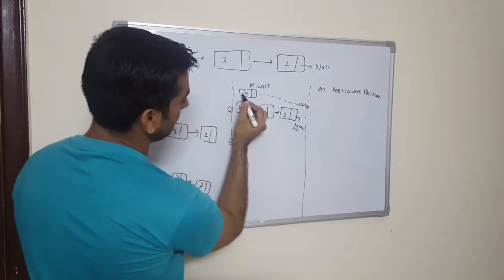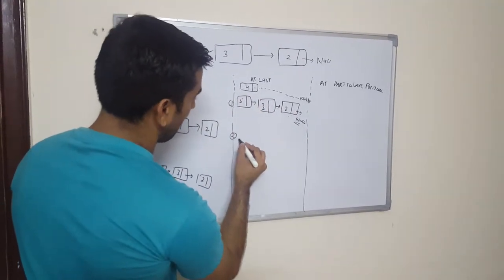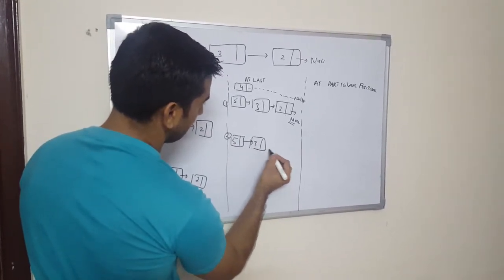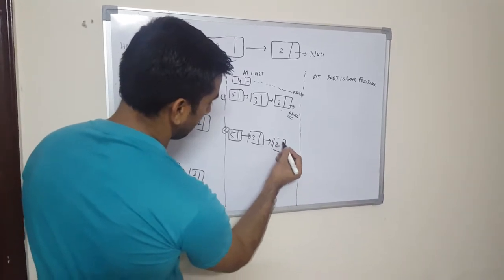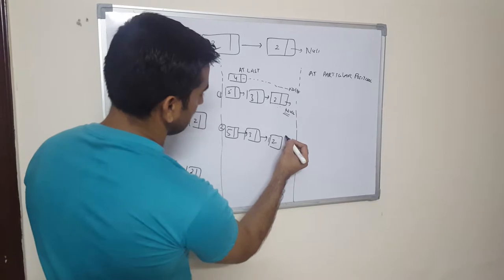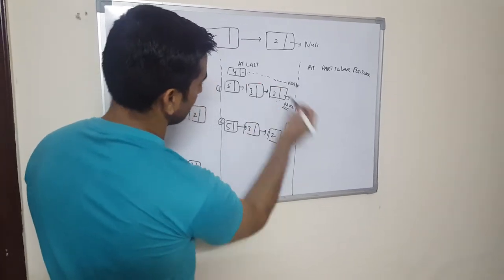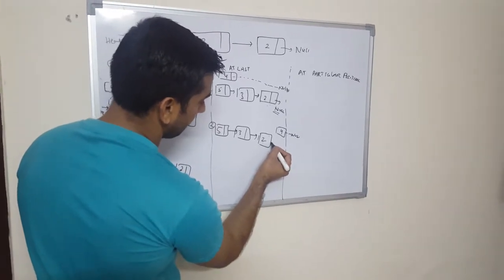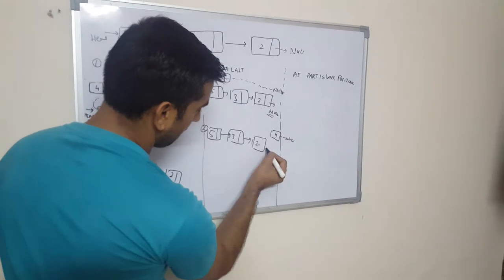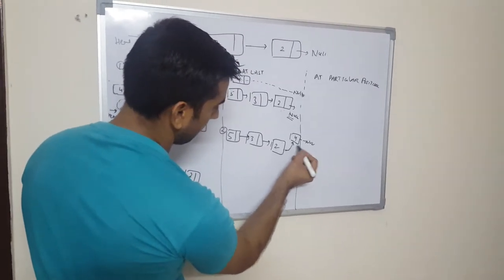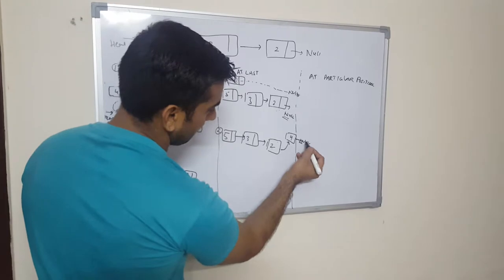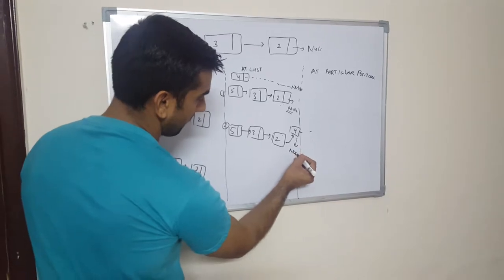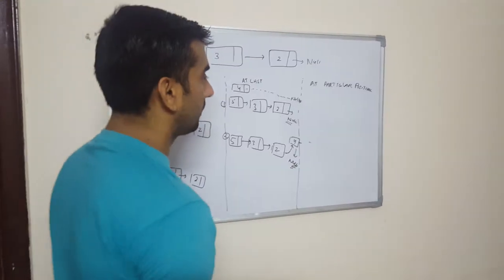In the second operation, the next pointer of the earlier last node — which was previously pointing to null — will now point to this newly added node. So the list becomes five, three, two, and then four at the end. The next pointer of the earlier last node is updated to the newly added node, and the newly added node's next pointer will always point to null because it is the last node.